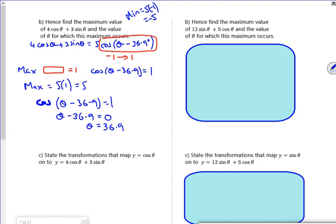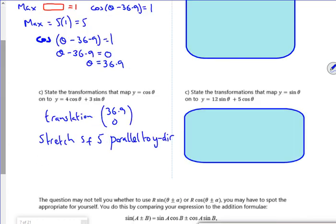I'm going to write down the transformations because it's just the stretch of the 5 and the translation of the 36.9. So the 5 is a stretch and the 36.9 is a translation. I'm going to pause it again and then reveal the question for you.